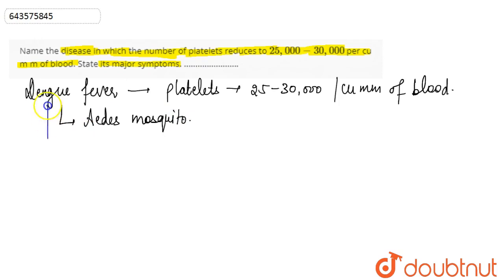In dengue fever, the symptoms that could be seen are: high fever, rashes or red spots on the body, and nausea.